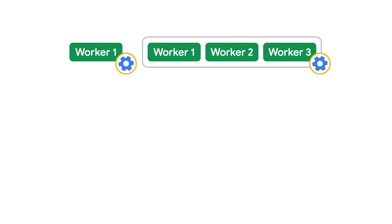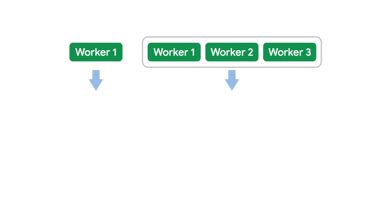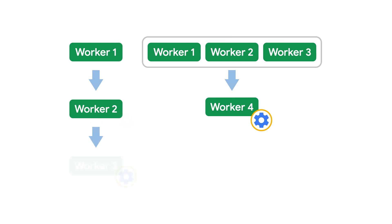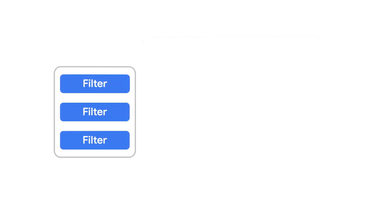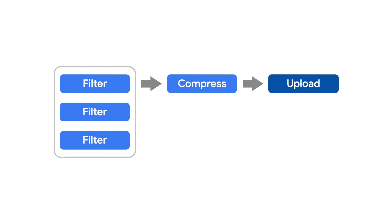Let's say you want to apply multiple filters on a particular image. When it's complete, compress the image, and finally upload the compressed image to a server. If we translate this to a WorkManager worker tree, the app needs to queue three image filter workers to run in parallel. The output of these workers are then passed to a compress worker. Once the compress worker completes, the output is passed into the upload worker, which uploads the image to a remote server.